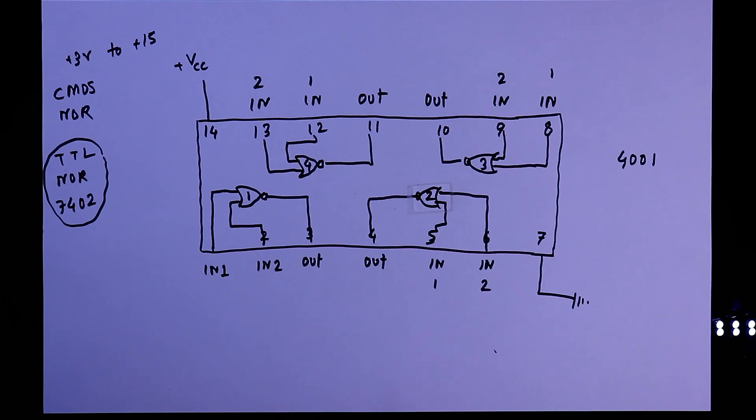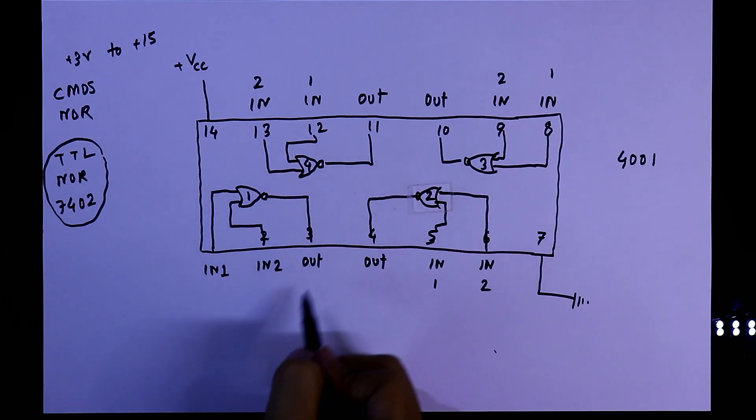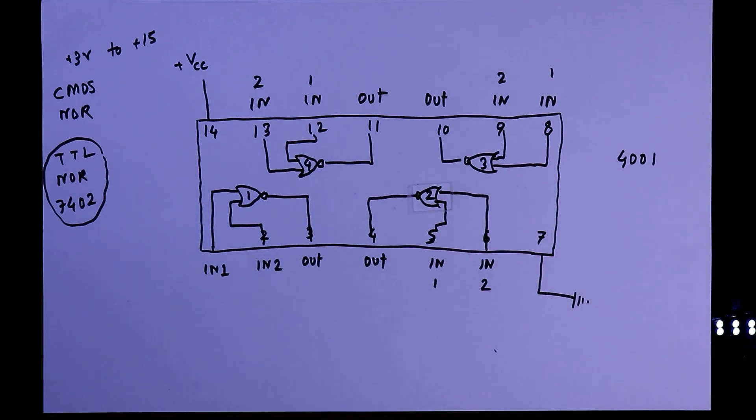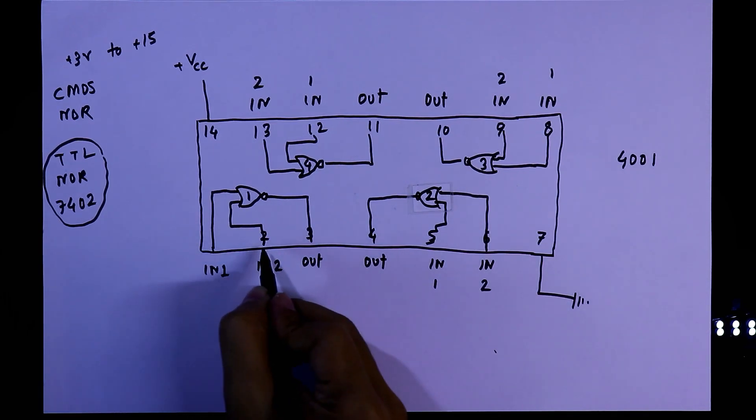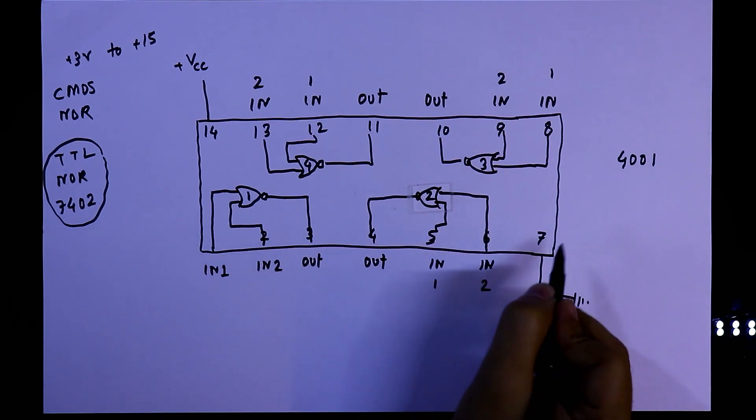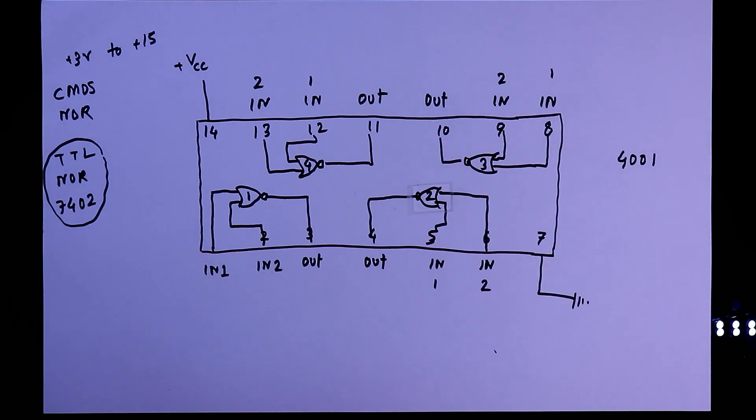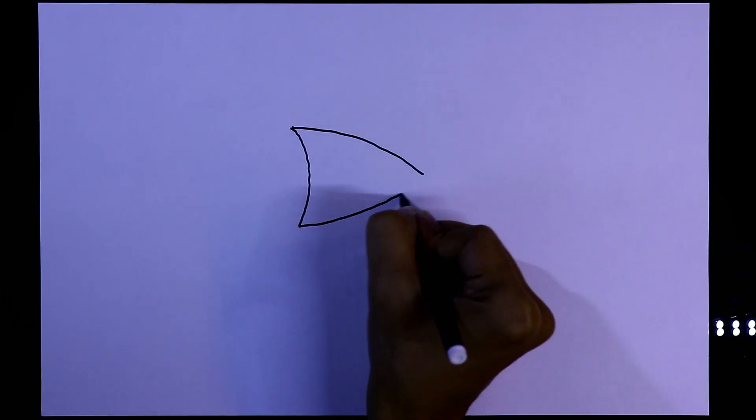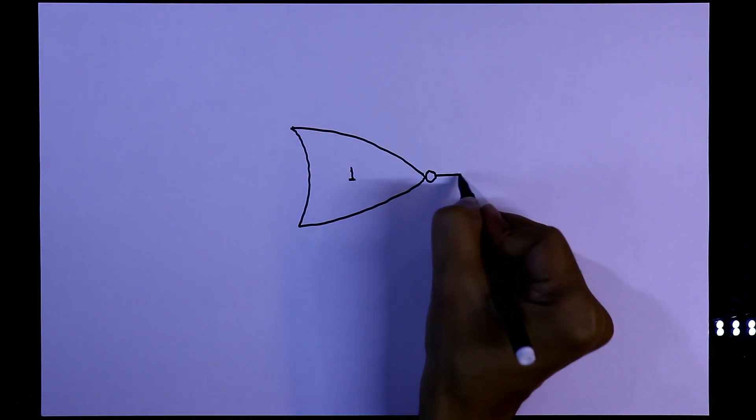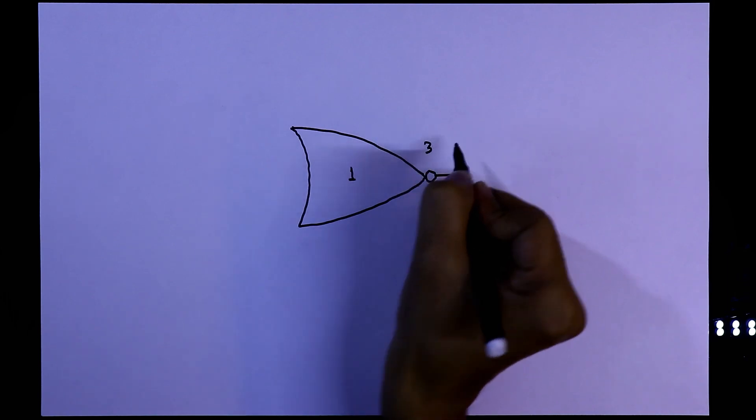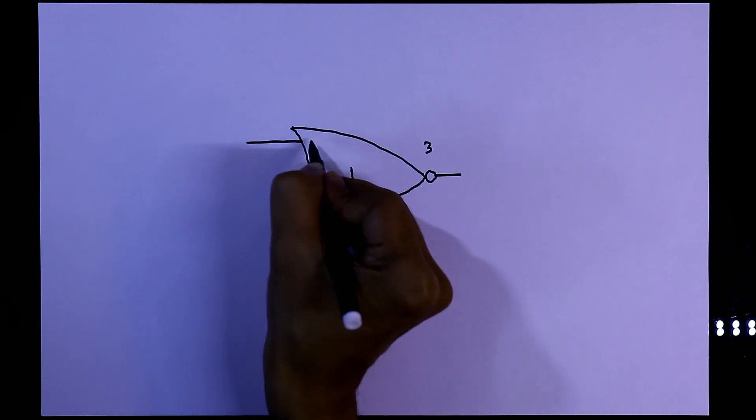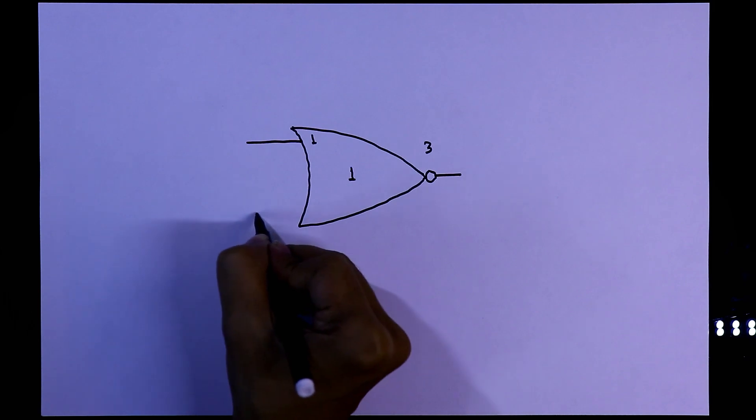Now to see the practical on the breadboard we will see with gate 1. So we need pin 1, 2, 3, 7 and pin 14. Gate 1, so the output is pin 3 and two inputs are pin 1 and pin 2.